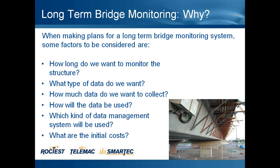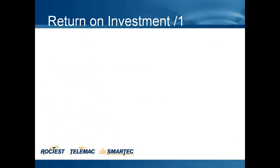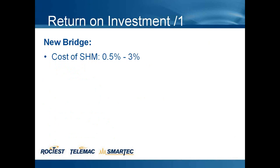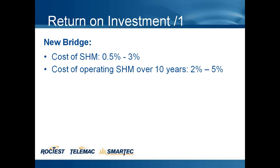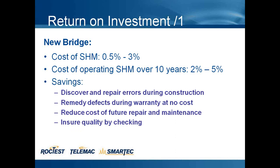To answer the last question, let's see an example of a return on investment. First, regarding new bridges, the cost of a structural monitoring system is approximately between 0.5% and 3% of the cost of the bridge itself. The cost of operating the system over 10 years is between 2% and 5% of the initial cost. In this way, you can save money by discovering repair errors during construction, remedying defects during warranty at no cost, reducing the cost of future repair and maintenance, and ensuring quality by checking.